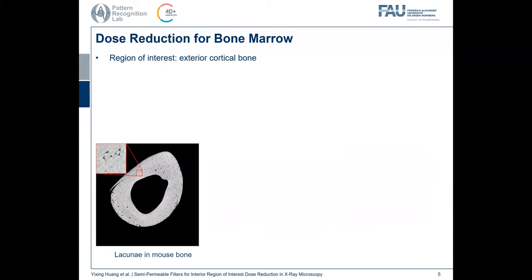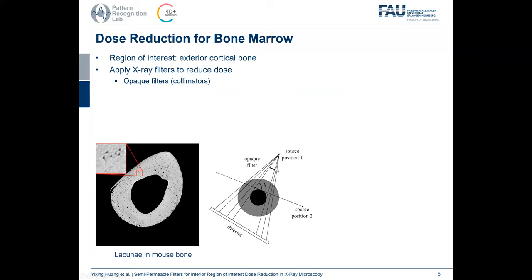Therefore, we want to protect the bone marrow from over X-ray exposure. The region of interest is the exterior cortical bone, which contains the lacunae, and we want to reduce the X-ray dose for the interior bone. There are two methods. One is to apply opaque filters, which are also called collimators. When the collimator is inserted, the X-rays in this region will be fully blocked. The second method is to apply semi-permeable filters.